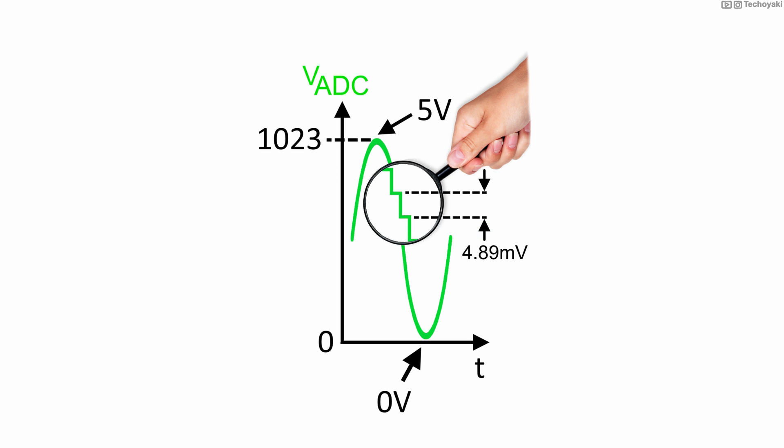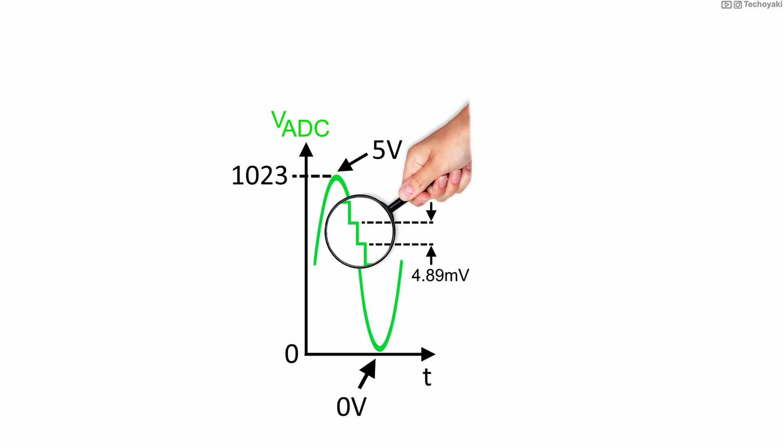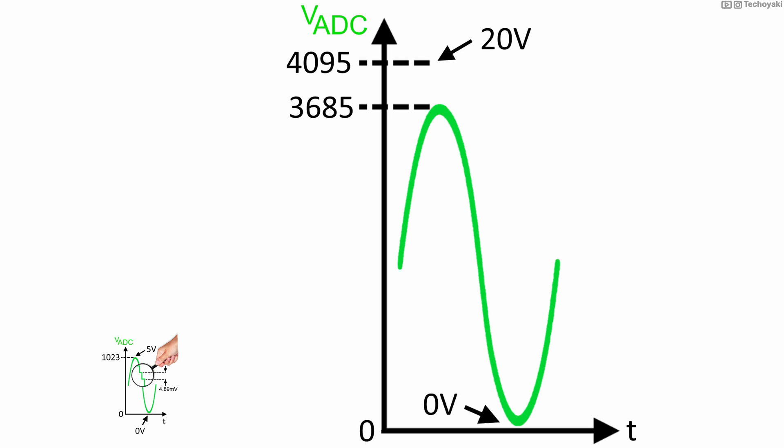Now, bringing everything back to our 18 volt signal scenario, if we assume no resolution is lost to measure up to 20 volts, specifically, the smallest incremental voltage that the ADC can sense, which again is approximately 5 millivolts in our case. Then, the 20 volt will correspond to an ADC value of 4095. And you can see that our 18 volt signal has an ADC value of 3685.